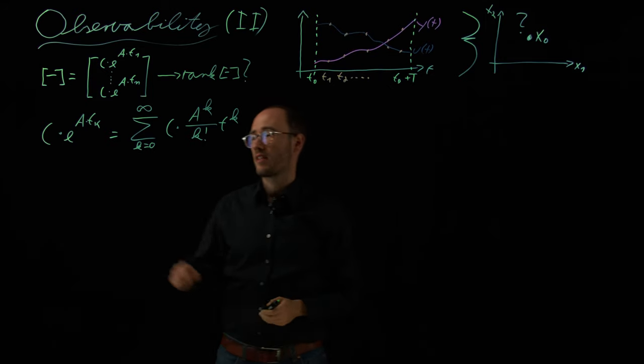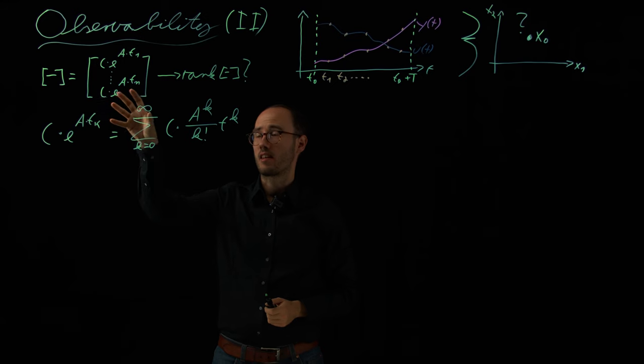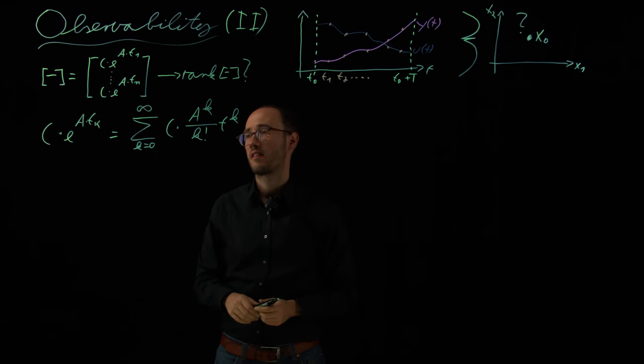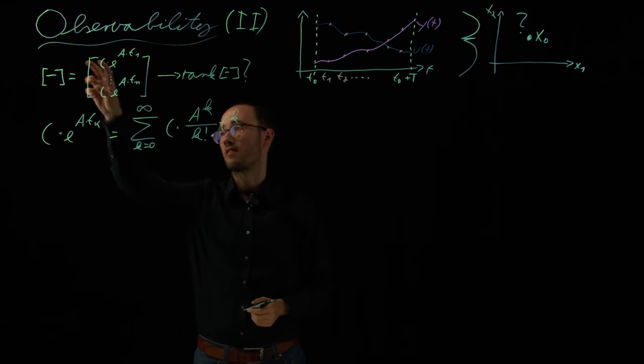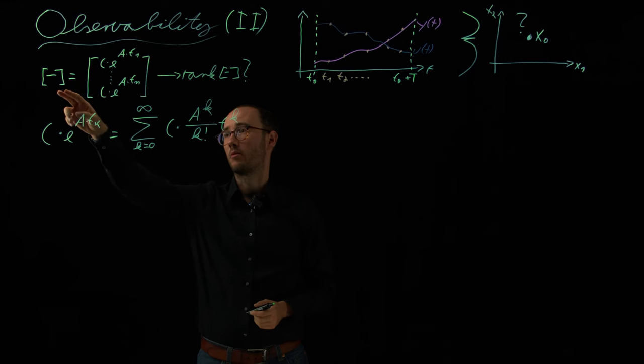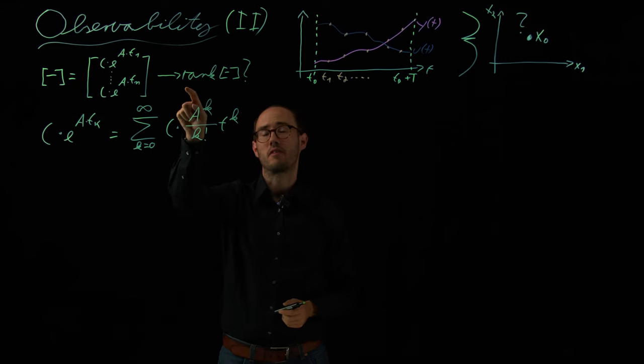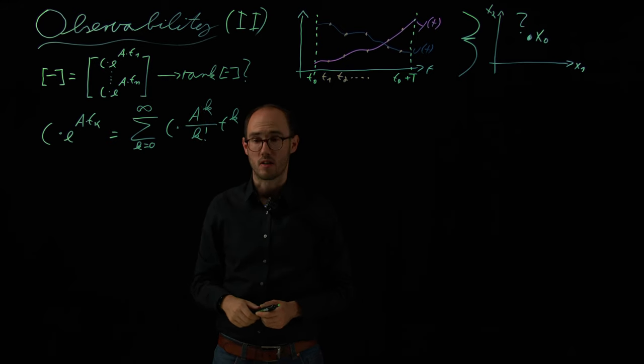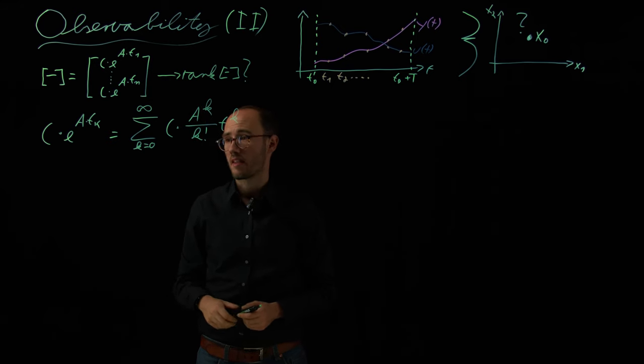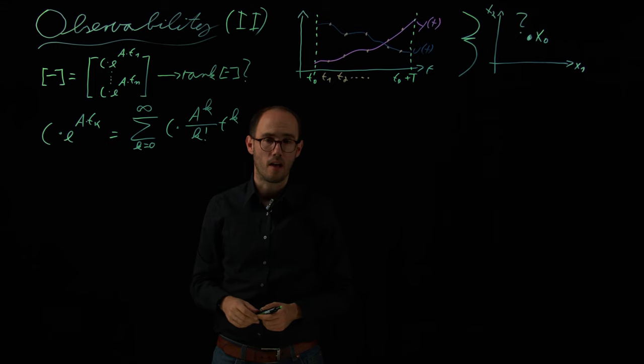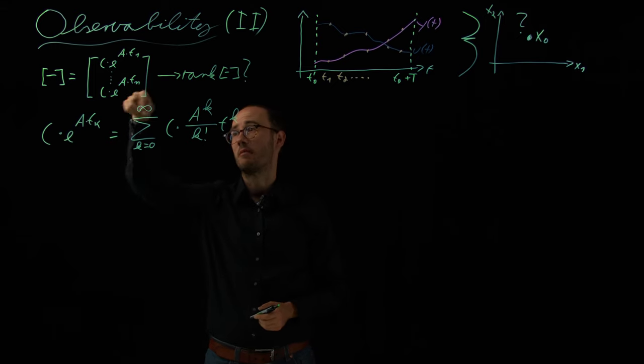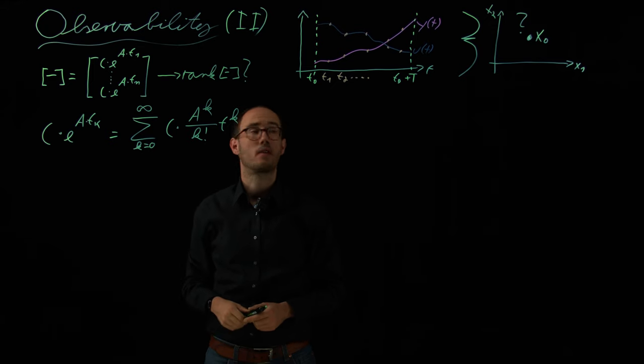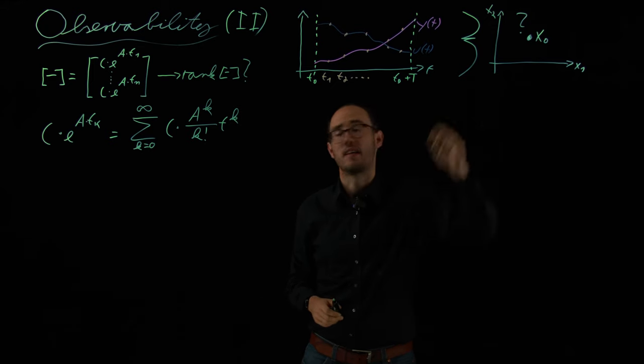In the previous video we have seen that the important criteria for a linear state space system is this matrix xi which I have defined, and we need to find out if the rank of this matrix is full. This is basically the content of this video that we will have a closer look under which conditions this matrix has full rank, because then we will be able to calculate x0 distinctly.